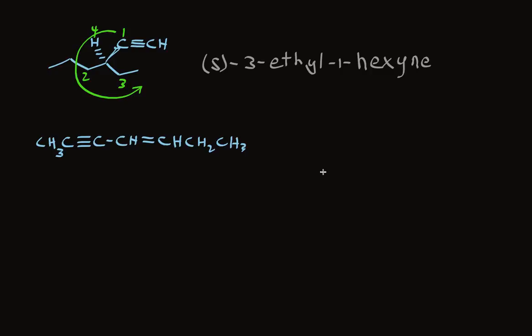Take a look at this example. Now we have two functional groups, an alkene and an alkyne. I've picked those to illustrate an important point. We number from the end of the chain that gets us to either of the functional groups the quickest. In this case, if we number from the left, we get to a functional group as carbon number 2. But if we number from the right, it's carbon number 3 before we get to a functional group. So we'll number from the left.